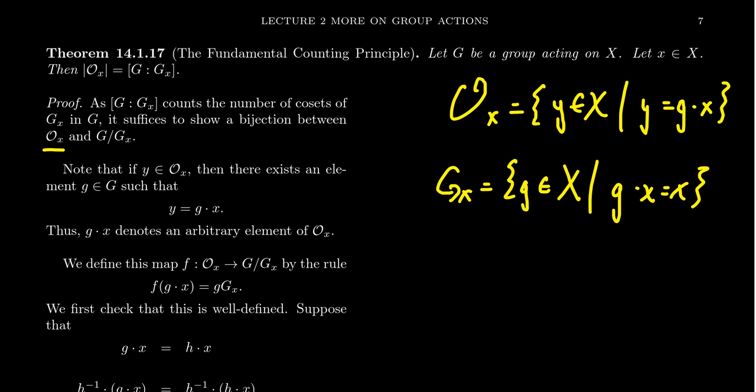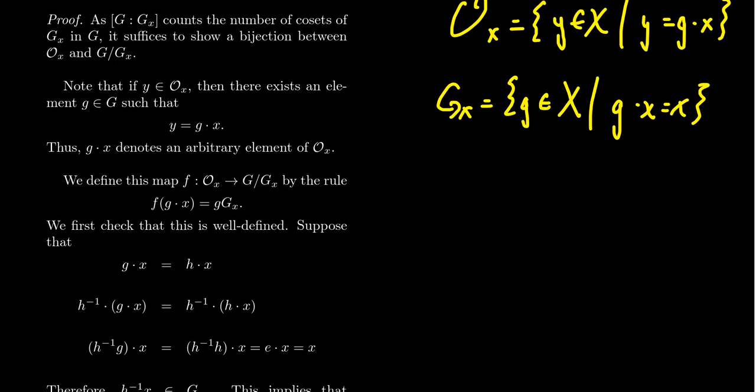So let's describe what that bijection is going to be. If I take an arbitrary element of the orbit, every element of the orbit can be factored as some g dot x. So in fact, I could replace the symbol y with just the symbol g dot x. g dot x represents an arbitrary element of O_x, so long as I don't specify what the element g is. If little g is allowed to be arbitrary, then g dot x is an arbitrary element of the orbit. That's important for our construction.